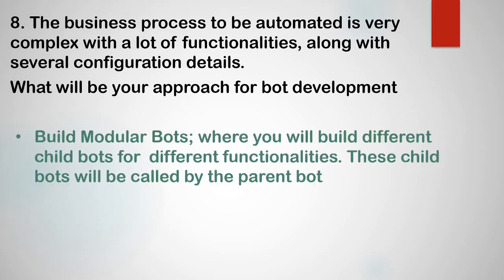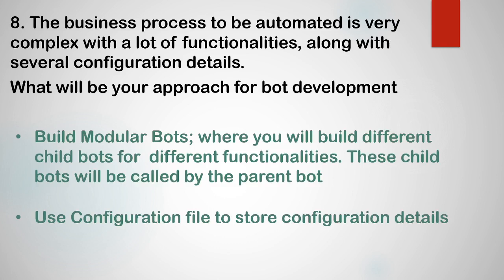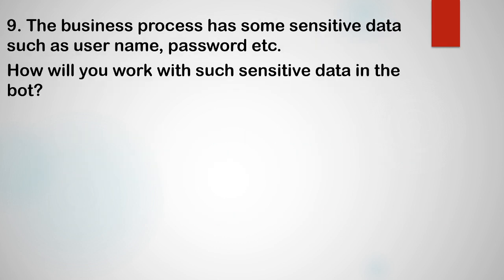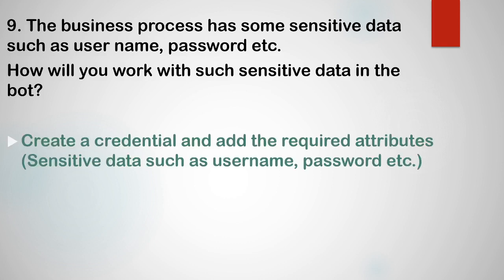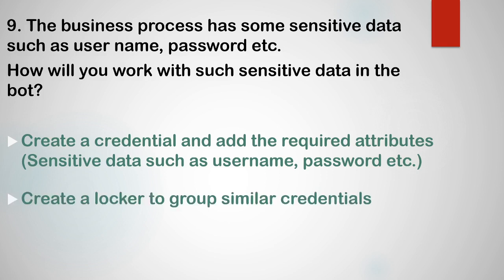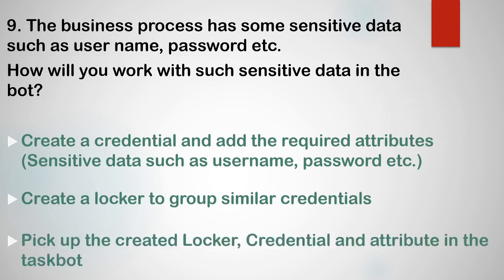After you've provided answers on modular bots and configuration files, the interviewer could ask about sensitive data. The question could be: the business process has some sensitive data such as username and password — how will you work with such sensitive data in the bot? In such cases you are going to use the concept of credentials and lockers. You create a credential and add the required attributes such as username and password, then create a locker to group similar credentials together, and then pick up that locker credential and attribute in the task bot wherever you require sensitive data.